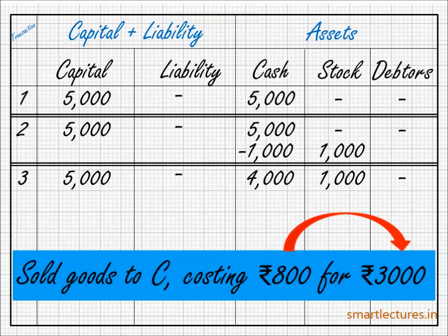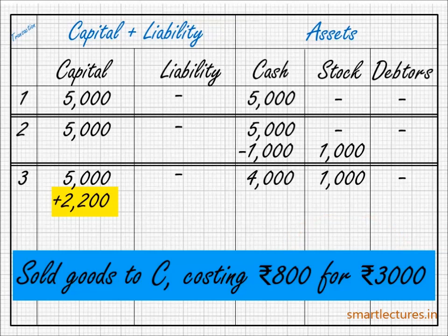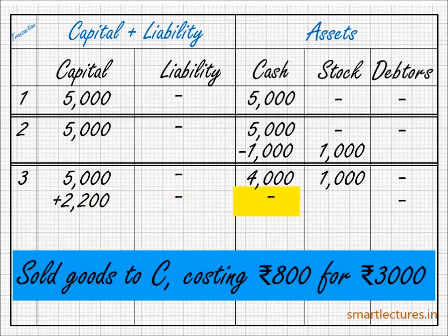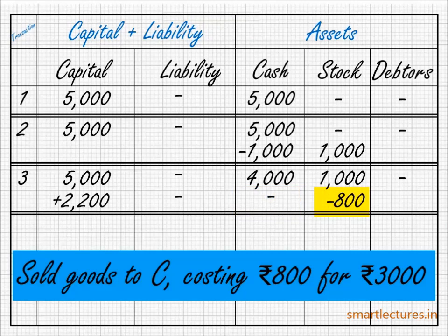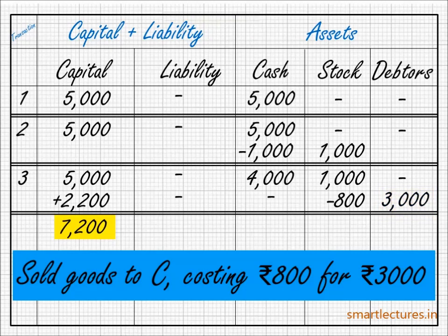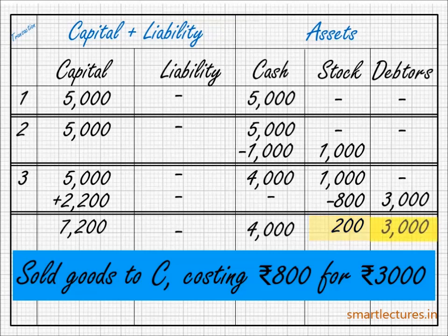Let's do the equation. Because there is a profit of Rs. 2200, it will be added to the capital: plus 2200. On the liability side, nothing. On cash, nothing, because we have not received any cash. But we have lost the stock of Rs. 800, so minus 800 in the stock column, plus 3000 in the debtors column, because we have created debtors by selling the goods on credit basis. Debtors is always our asset. So the new equation will be: capital 7200, liability zero, cash 4000, stock 200, debtors 3000.